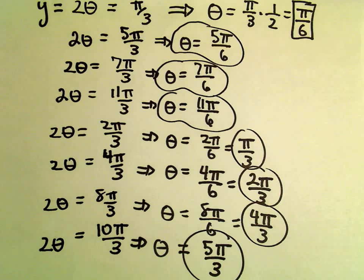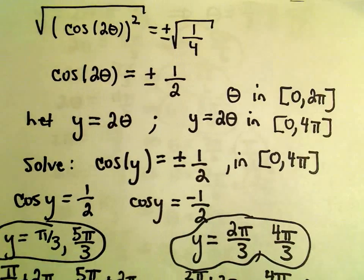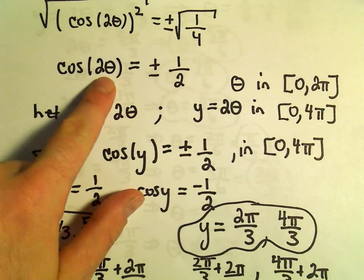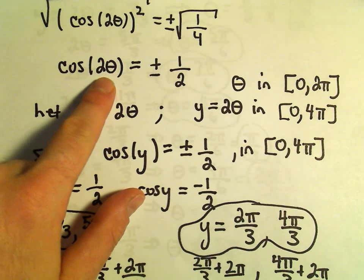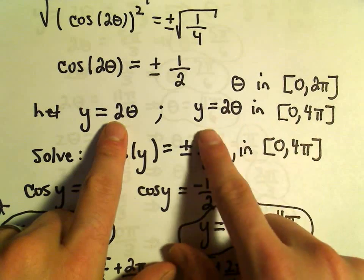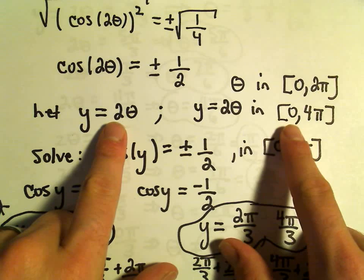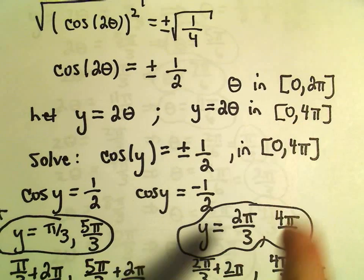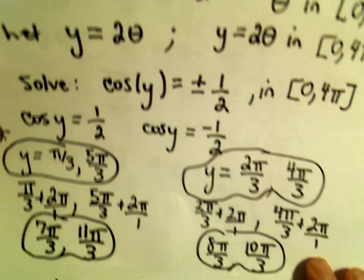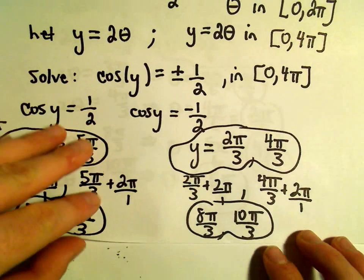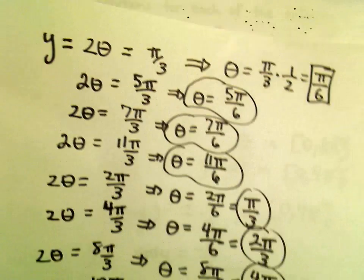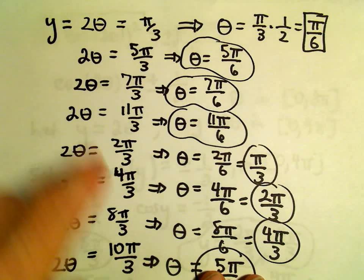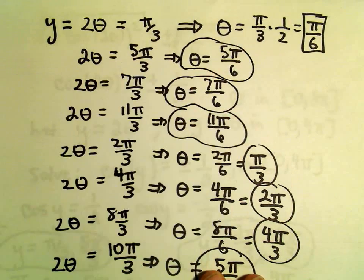Typically on these types of problems, you want to eventually get it down to just cosine or sine — whatever your trig function is. If there's 2θ, 3θ, or any coefficient, replace it with a substitution variable, and make the corresponding adjustment to the interval. Then think about solutions in that new interval — here it was 0 to 4π. Then re-substitute back, set that equal to all the solutions you found, and simply solve for θ by dividing by 2.